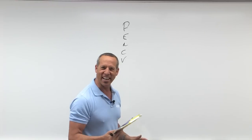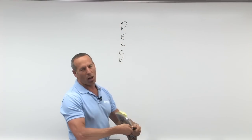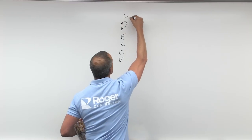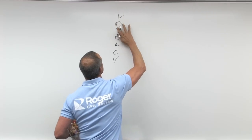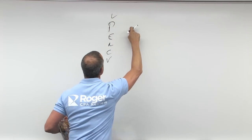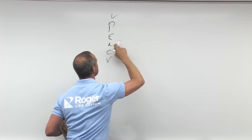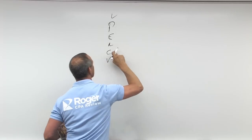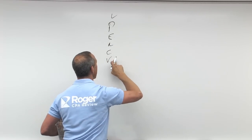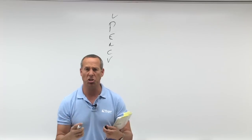So this is what management is asserting. You perceive: understandability and classification, presentation and disclosure, existence and occurrence, rights and obligations, completeness, cutoff, allocation, valuation, and accuracy. These are the assertions.